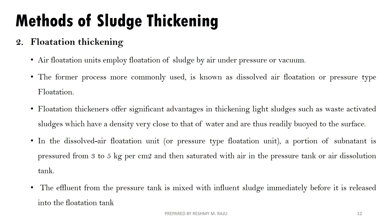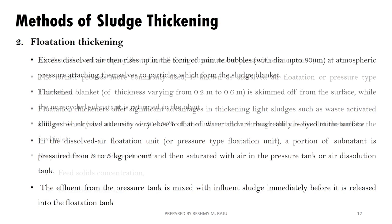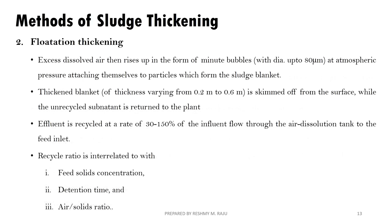The next method is Flotation Thickening. This involves flotation of sludge by air under pressure or vacuum. This method is particularly suitable for activated sludge because the density of activated sludge is very close to that of water. Pressure of 3 to 5 kg per centimeter square is applied to saturate the sludge with air. Small bubbles with a diameter up to 80 micrometers attach to the sludge particles and lift them to the surface, forming a thick sludge blanket 0.2 to 0.6 meters thick, which is then skimmed off.